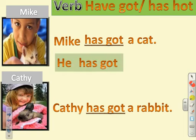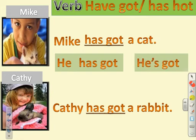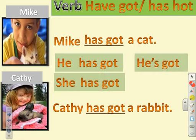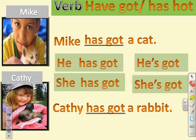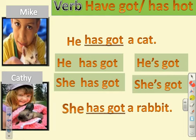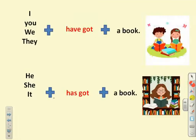Remember: 'he has got' becomes 'he's got,' and 'she has got' becomes 'she's got.' You can use 'he' instead of Mike, and 'she' instead of Kathy. So 'have got' and 'has got' are like sisters — each sister has some friends.